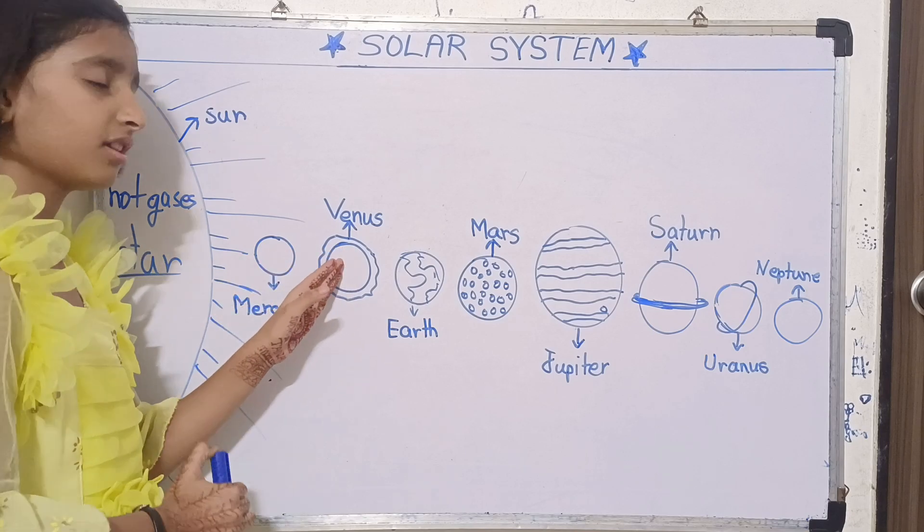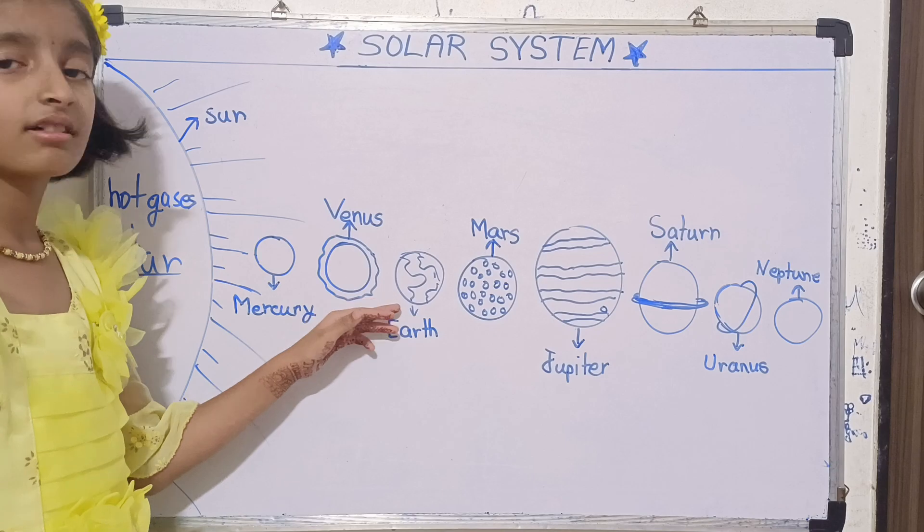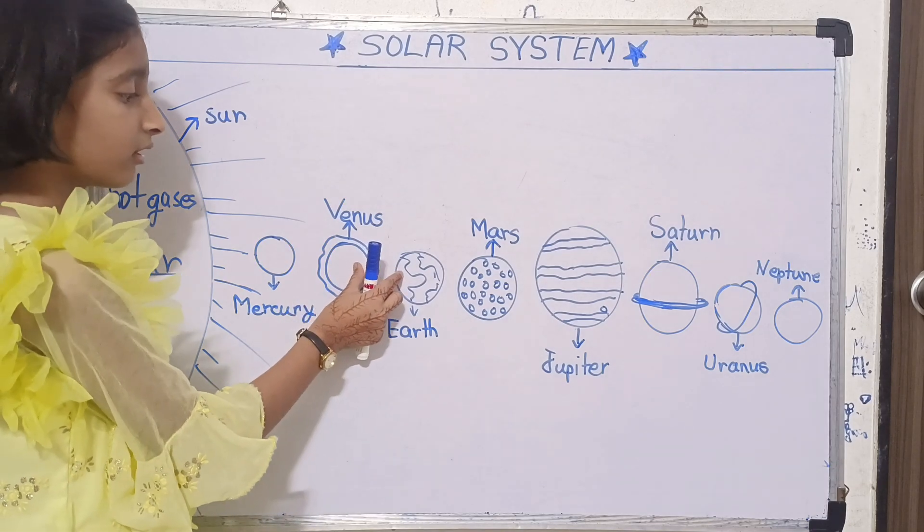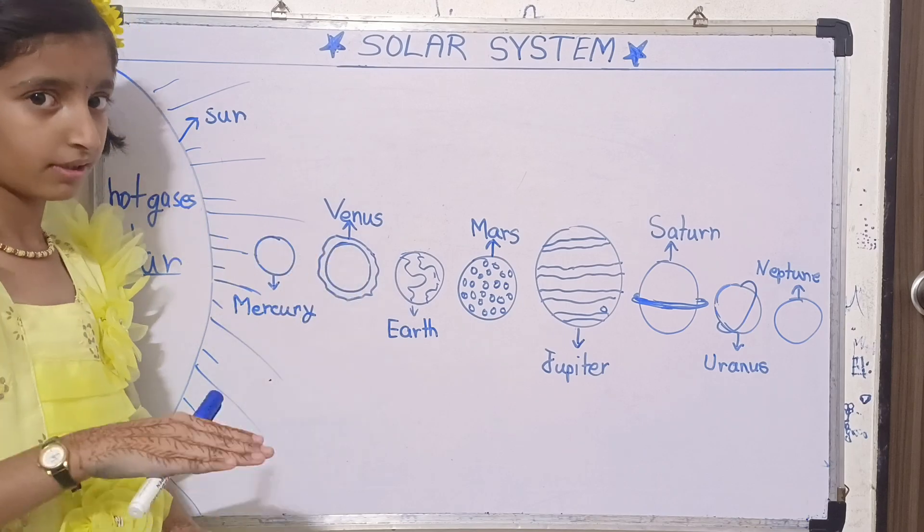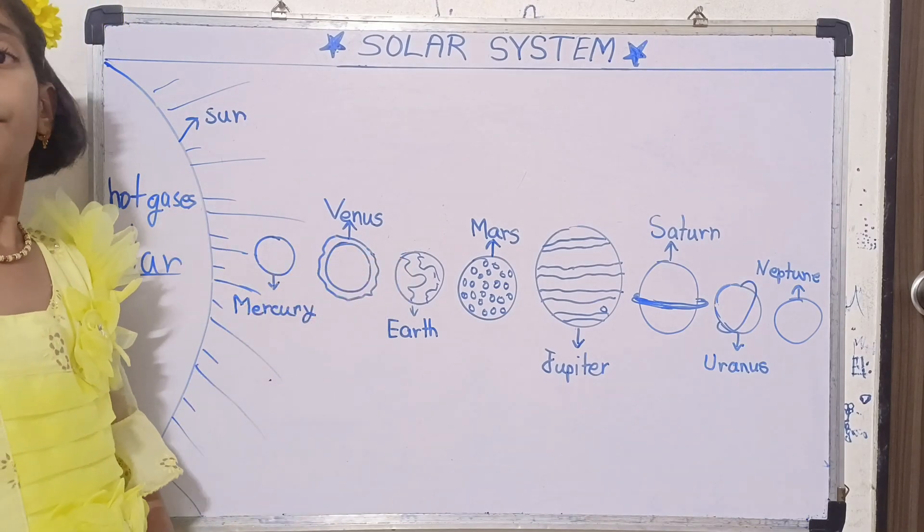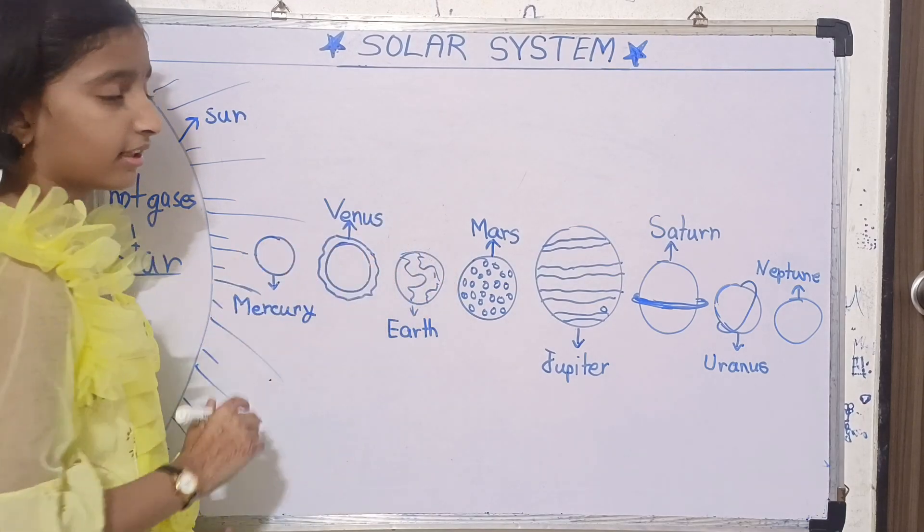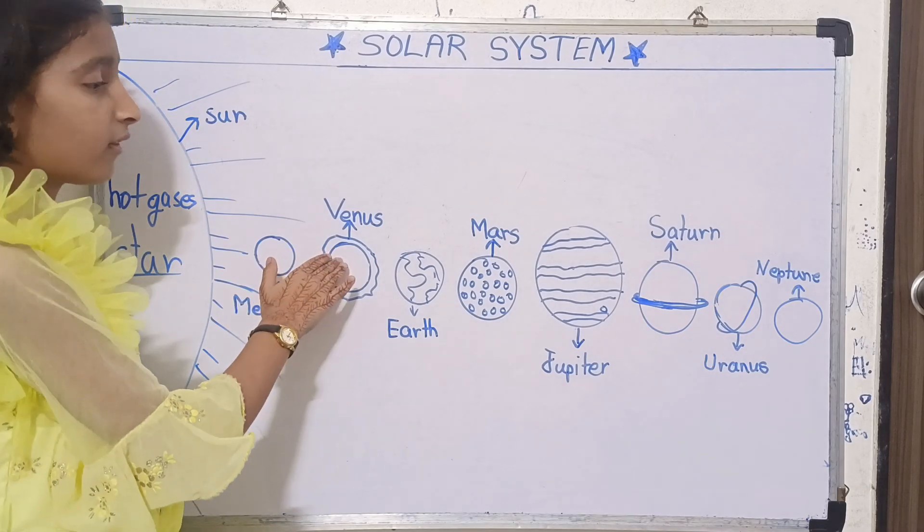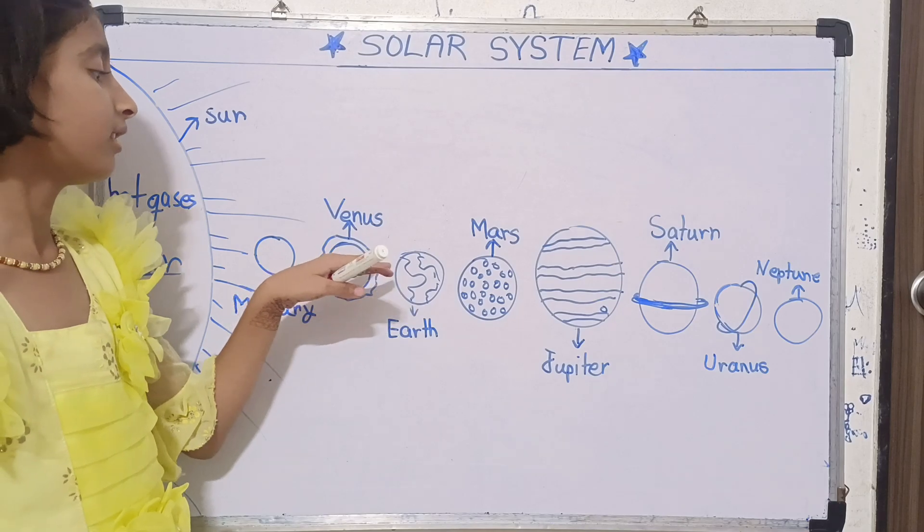It is also called Earth's twin because if you compare the size of Earth and Venus, the size is the same. Because of this it is called Earth's twin. But when you land from Earth to Venus, there is quite a huge difference between Venus and Earth.